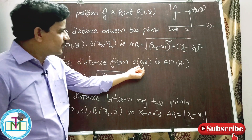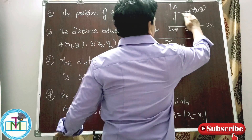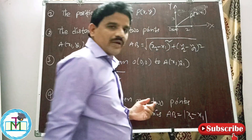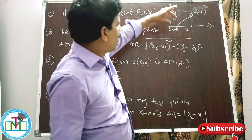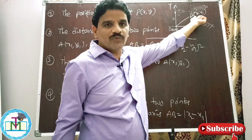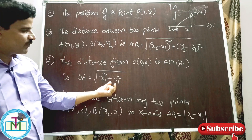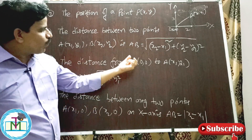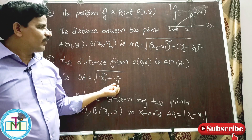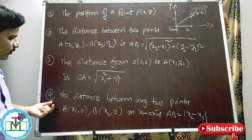Point number three: the distance from the origin to a point (x1, y1). Here one point becomes (0, 0) and the second point becomes (x1, y1). In this case the distance is simply the square root of x1² + y1². Whenever one point is the origin, finding the distance becomes very easy — it's just the square root of x1² + y1², since x2 and y2 are both zero.